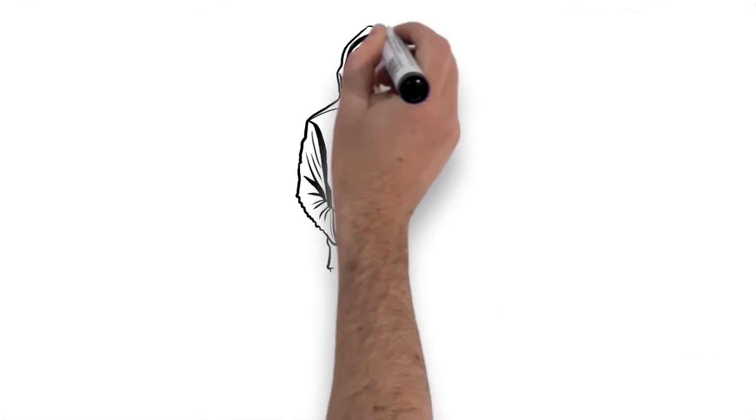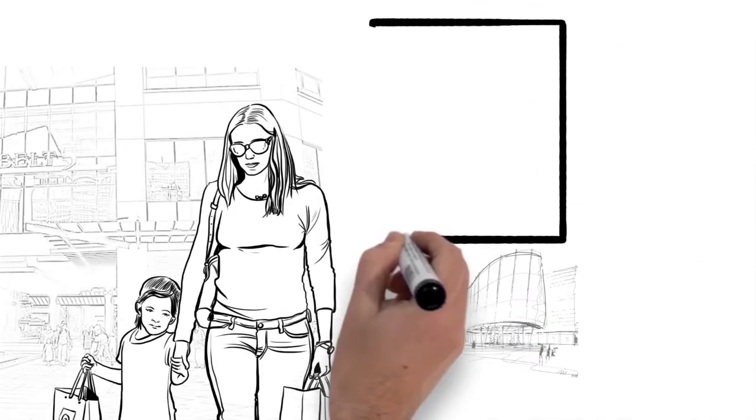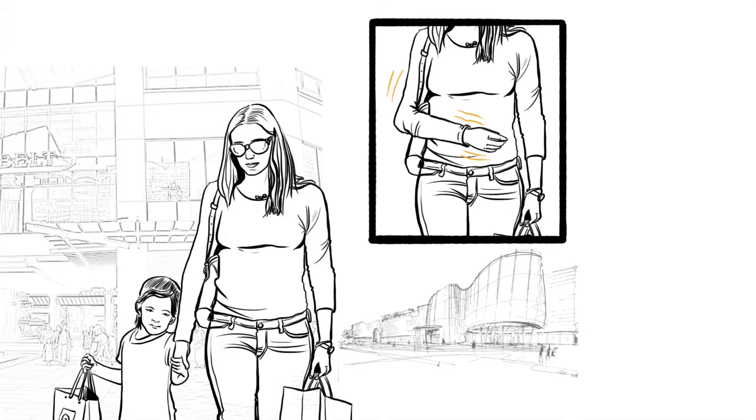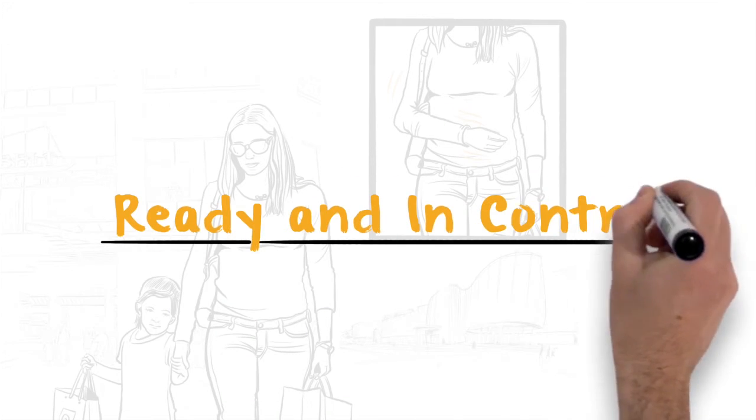Meet Alice. Alice knows the unexpected can come from anywhere. She wears a Daltech Force belly band holster and is always prepared to take action with her compact pistol if necessary. She is ready and in control.